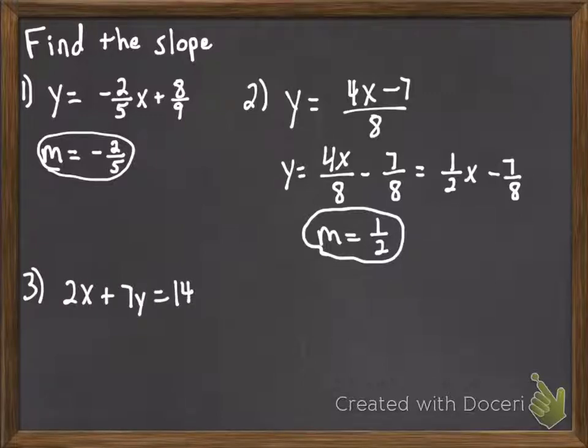In our next example, the equation is not even solved for y, so we're going to have to go through the work of solving that equation for y. So remember, we want to get y by itself. So we can begin by subtracting off a 2x to get y by itself. That leads us to 7y equals 14 minus 2x.